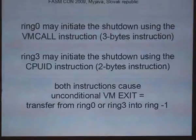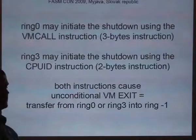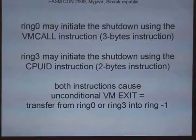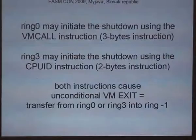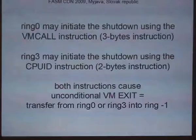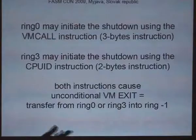There are two possibilities for how to initialize the hypervisor shutdown. For example, RING0 might initialize it, but also RING3 might initialize the shutdown. RING0 may call the VMCALL instruction, which is a 3-byte instruction, or RING3 might initialize it using the CPUID instruction, which is also 3 bytes. Both instructions cause an unconditional VM exit, which is a break from the guest into the hypervisor.